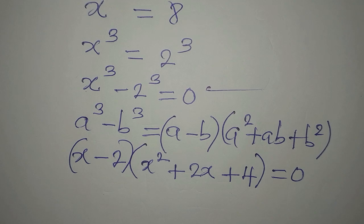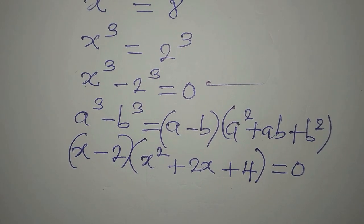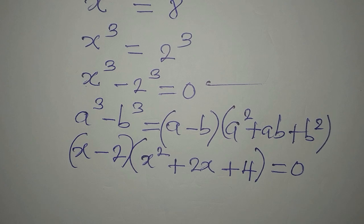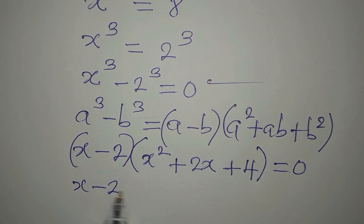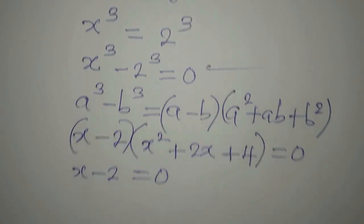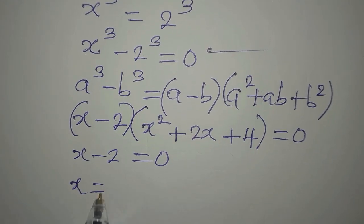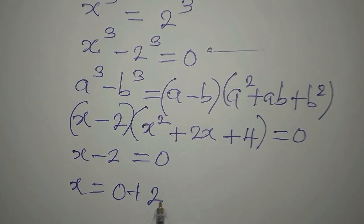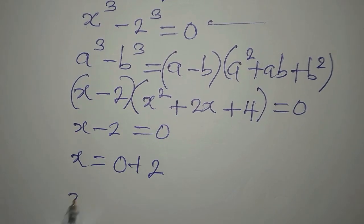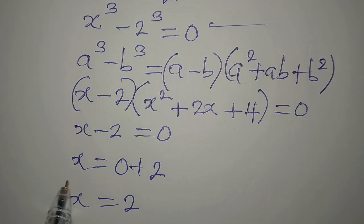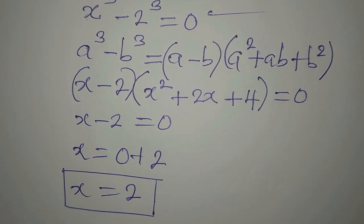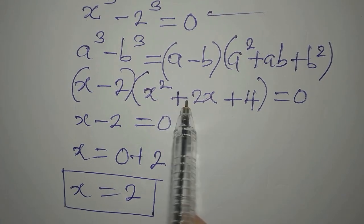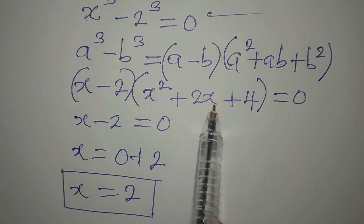We are multiplying these two factors to get 0, so either of them must equal 0. Picking the first factor: x minus 2 equals 0, meaning x equals 2. So we have one of the solutions. To get the other solutions we take the second factor and equate it to 0.